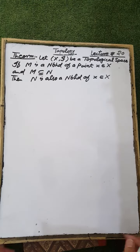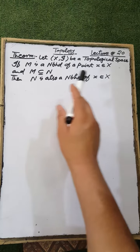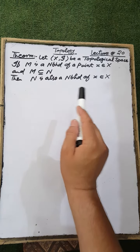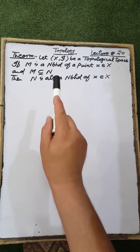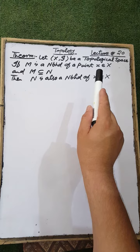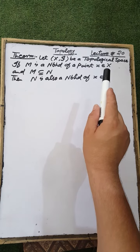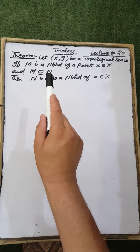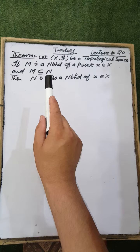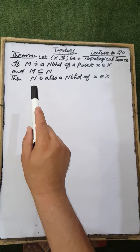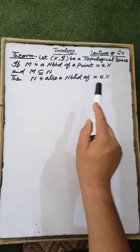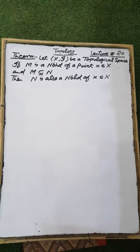Next theorem: Let X be a topological space. If the set M, which is a subset of the ground set X, is a neighborhood of a point X contained in the ground set X, and M is a subset of N, then the set N is also a neighborhood of the point X of the ground set X.